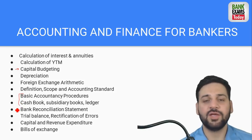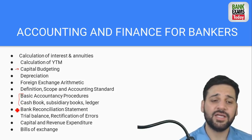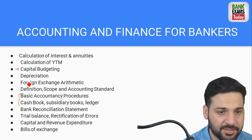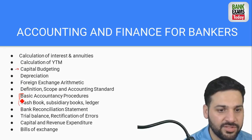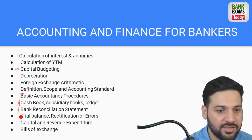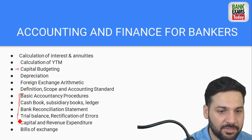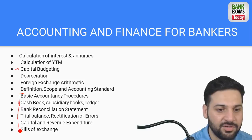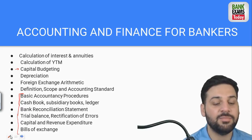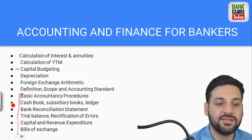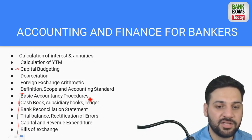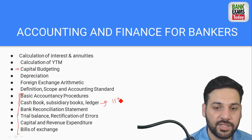If you have your Plus 1 book, reading that will cover everything — basic accounting procedures, cash book, bank reconciliation statement, trial balance, capital and revenue expenditure, rectification of errors — all of this is from the Plus 1 (Class 11) textbook.